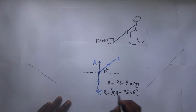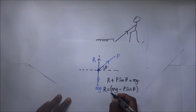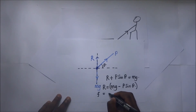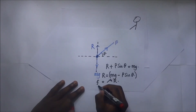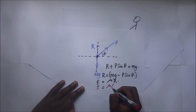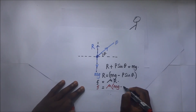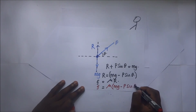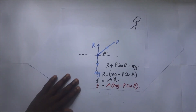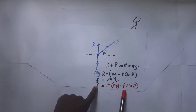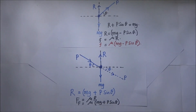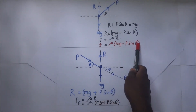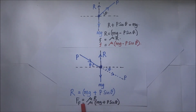So if this is the normal reaction R when pulling, it means our frictional force in this case is: F equals mu times R, which gives us mu times (Mg minus P sine theta). So the frictional force when pulling is F equals mu times (Mg minus P sine theta). Let's take note of these two different expressions for friction: when pulling, F equals mu(Mg − P sinθ); when pushing, F equals mu(Mg + P sinθ).